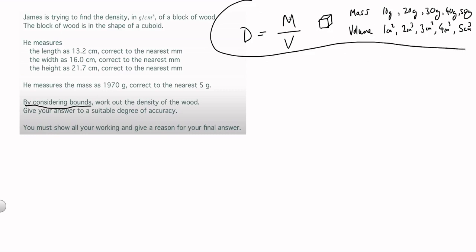We know mass divided by volume gives you density. Let's suppose we've got something — a little cube. We're not sure about its mass; it could be 10, 20, 30, 40, or 50. And the volume could be 1, 2, 3, 4, or 5 centimetres cubed. Now I'm going to consider what could be the lowest and highest possible density given these values.